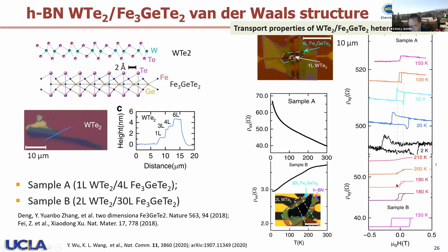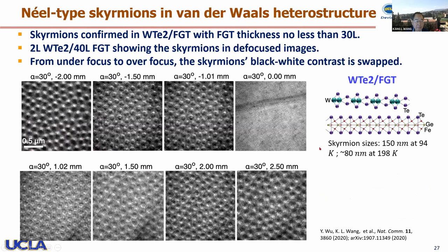The thin film is more semiconducting or insulating while the thick film is more metallic. As explained by Dr. Sejong Wu, with the Néel-type skyrmia, you need to tilt your sample axis by 30 degrees. Going from overfocus to underfocus, you see contrast change from bright-dark to dark-bright, suggesting it's possible that a Néel-type spin texture skyrmion structure is present.